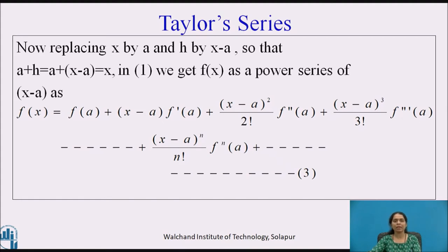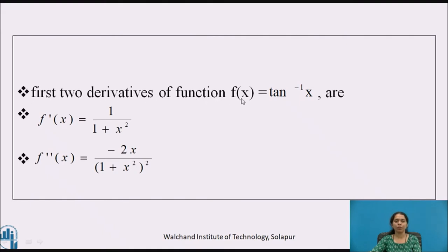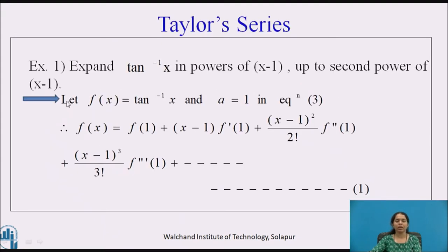Let's look at an example to understand how to choose the correct series. Before that, please pause your video for a minute and write the first two derivatives of f(x) = tan⁻¹x. The first derivative f'(x) = 1/(1+x²), which is a standard result. The second derivative f''(x), applying the quotient rule, is −2x/(1+x²)².